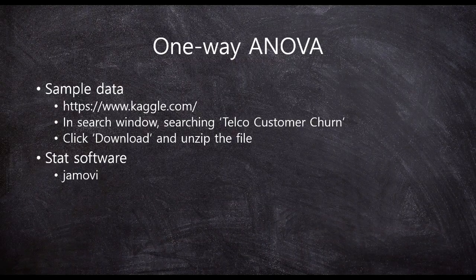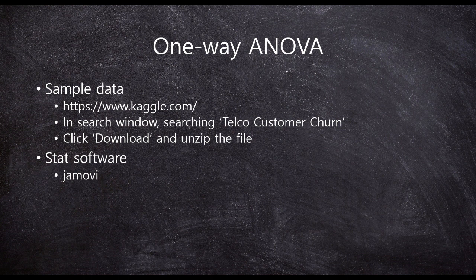Today we will practice one-way ANOVA using Jamovi. The sample data comes from Kaggle.com. You can access Kaggle.com and in the search window, just search 'telco customer churn' and download the file. After downloading, unzip it — there will be a CSV file inside. That is our sample data.